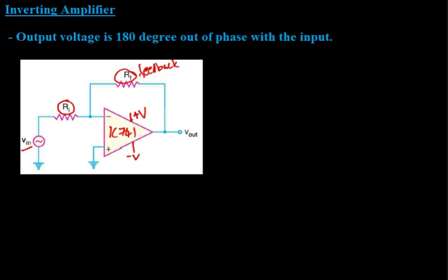Since the input voltage is applied to the inverting terminal, the inverted voltage is given back to the input terminal through a resistance RF, which is called the feedback resistance. So the fraction of the output voltage fed back to the input signal will be 180 degrees out of phase. This circuit represents a negative feedback. The input is applied to the inverting terminal of the op-amp through a series resistance RI.